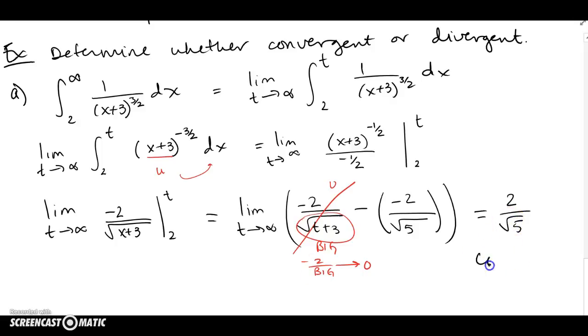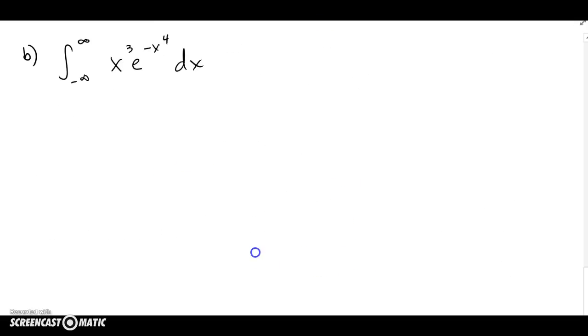And all I have left is negative and negative positive over 2 root 5. So this actually goes to a finite number, and therefore this integral is convergent. Okay, let's look at the next example.